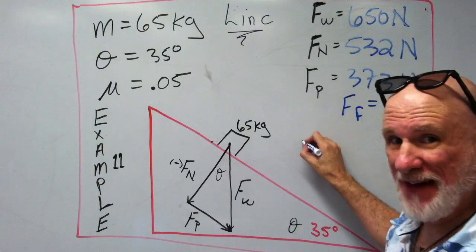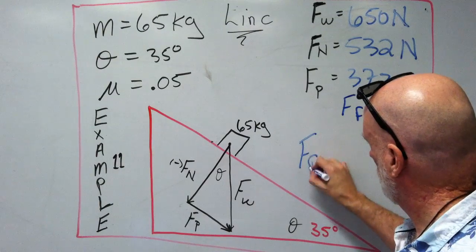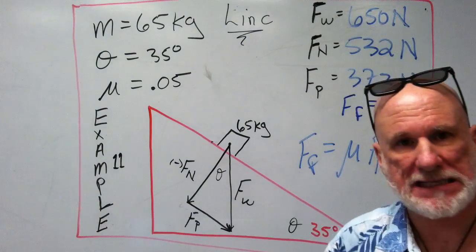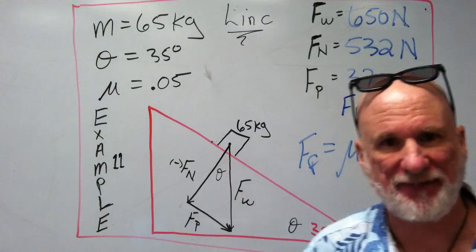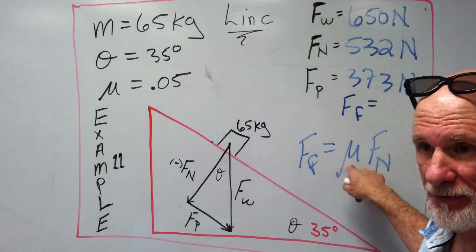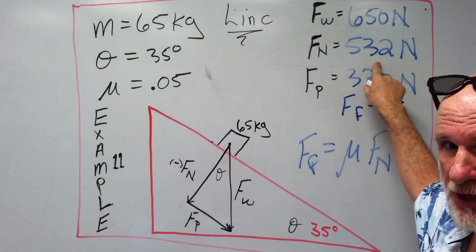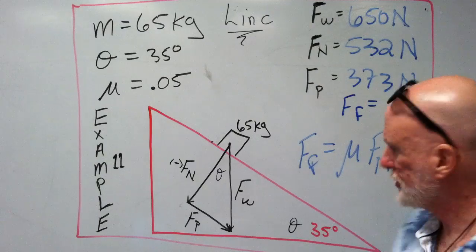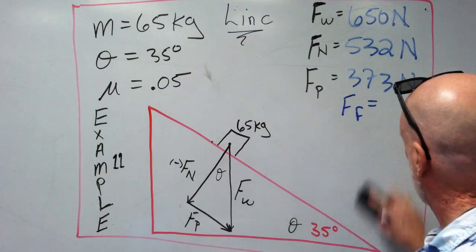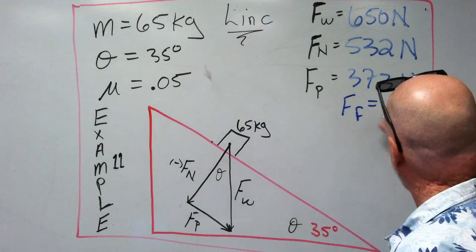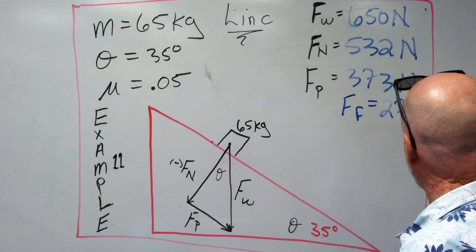And FF, 0.05 times FN. So 0.05 times 532, 0.05 times 532 is going to be 27. 27 newtons.